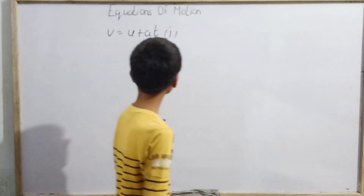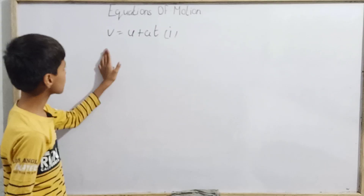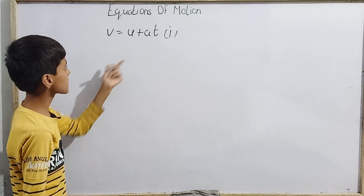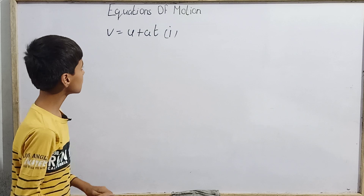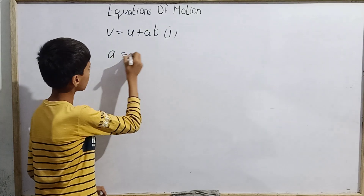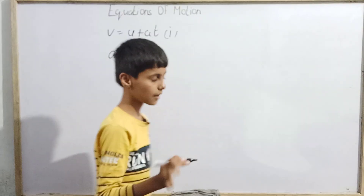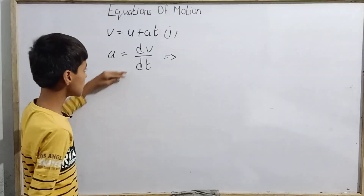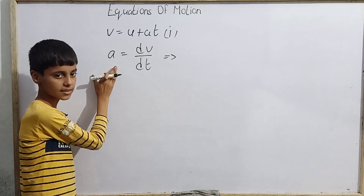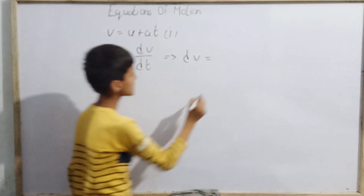For the first equation of motion, v equals u plus at, we need to start from the definition of acceleration. We know that a equals dv by dt. Now doing cross multiplication: dv equals a dt.